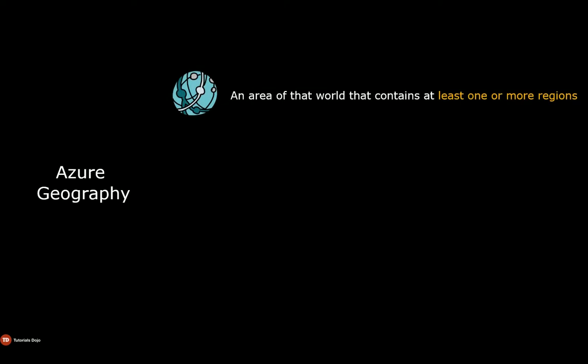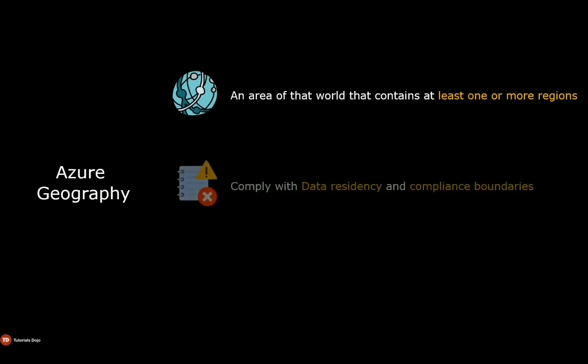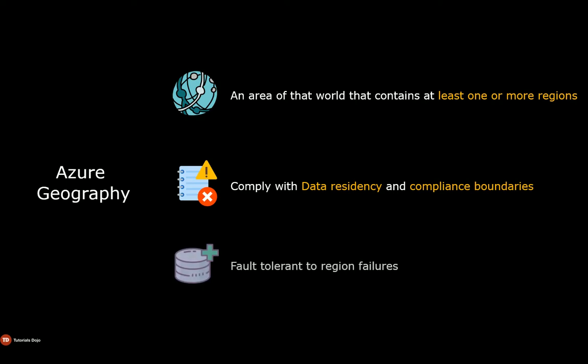An Azure geography is an area of the world containing at least one or more regions. The purpose of a geography is to comply with data residency requirements and compliance boundaries. Geographies are also fault-tolerant to withstand complete region failure by leveraging Microsoft's dedicated high-capacity networking infrastructure.